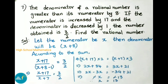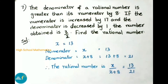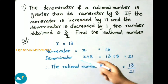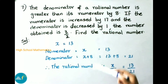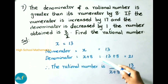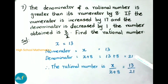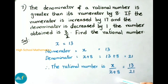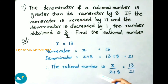Now we have to find the numerator and denominator, and then find the rational number. We got x = 13. We have taken numerator as x and denominator as x + 8. So numerator is 13 and denominator is 13 + 8 = 21. Therefore the rational number is 13/21.